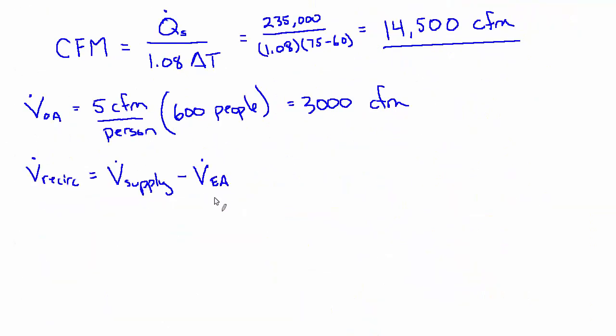And I wrote EA here, but this could also be OA. I think I will change that. They're the same volume. They're both 3,000, so I'd get away with it. But let's be clear. So 14,500, I'm skipping units here, minus 3,000 equals 11,500 CFM.